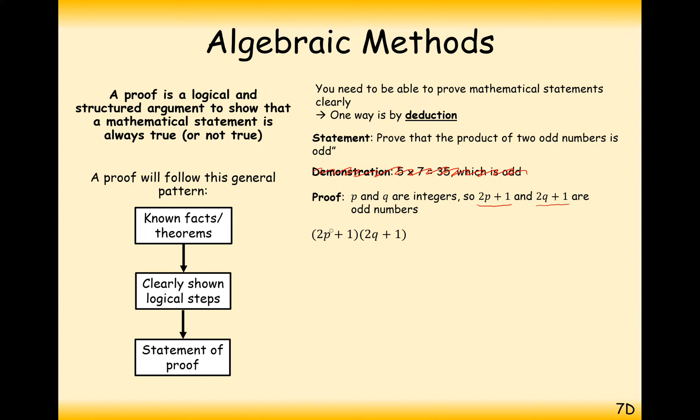So let's multiply these two numbers together now, and we do this by expanding the brackets just as you think we would. So this is our, effectively, this is our known fact, and now we're on the clearly showing logical steps part of our proof. So what we have to now do is prove that this is going to look like an odd number. It's got the plus 1 at the end bit here, which is great, because all odd numbers can be written as 2 times something, add a 1 to make it an odd number.